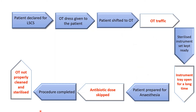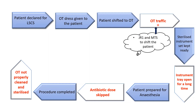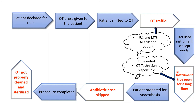A problem flow chart was made to address these problems and work out their possible solutions. After declaring the patient for cesarean section, it was seen that too many random people would be involved in shifting the patient to OT, which led to increased OT traffic. To address this, it was decided to assign the responsibility of shifting the patient to JR1 and MTS worker on duty. It was also seen that the instrument tray was kept open for a long time, sometimes for even an hour. To avoid this, a record would be made for the time between the opening of the set and the start of surgery, and the OT technician would ensure the tray was not kept open for a long period.